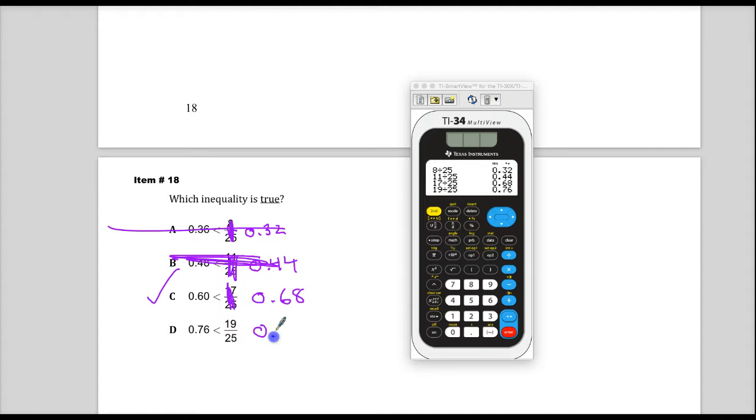And finally, 0.76. This is a close one because it's the same thing. If this said less than or equal to, it would be true. But it doesn't, it just has less than. So no, 0.76 is not less than 0.76.